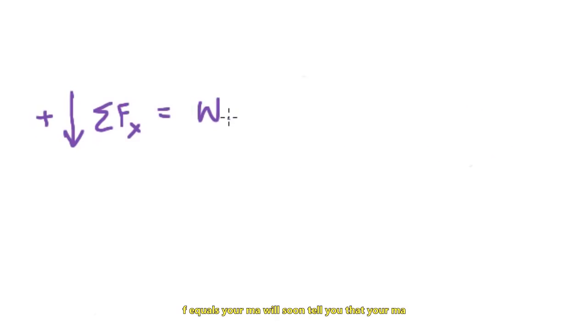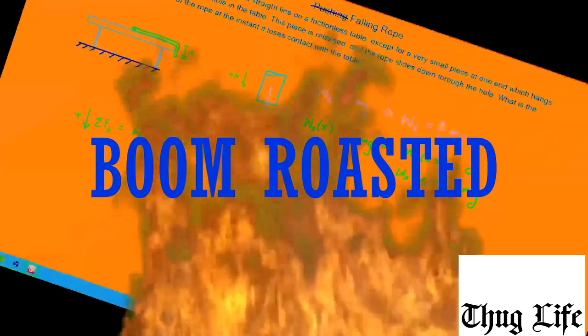F equals your maw will soon tell you that your maw hyperbolically likes exponentially fast rope. I don't know what that means, but it sounds funny. Boom. Roasted.